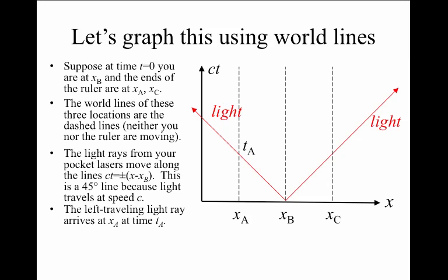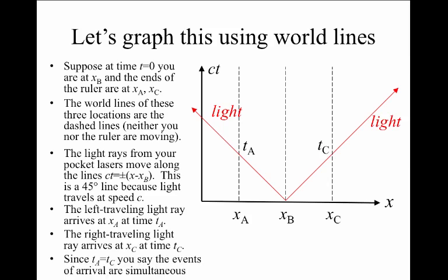The left ray will arrive at location x sub A at a time t sub A. It's going to be later, often to the future, after t equals zero. The right ray would arrive at location x sub C at a time t sub C. These two times have to be the same because the two distances from B to C or from B to A are equal in magnitude. And the speed of light is propagating, or the speed of light of propagation is the same for both the left ray and the right ray. Therefore, T A has to equal T C.